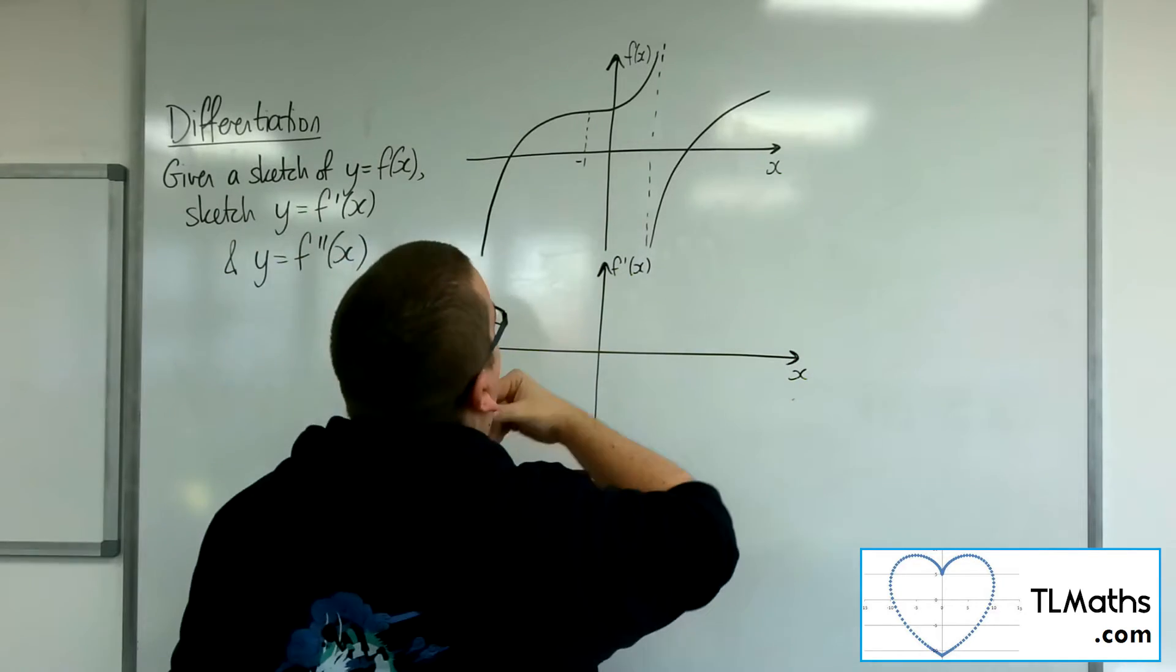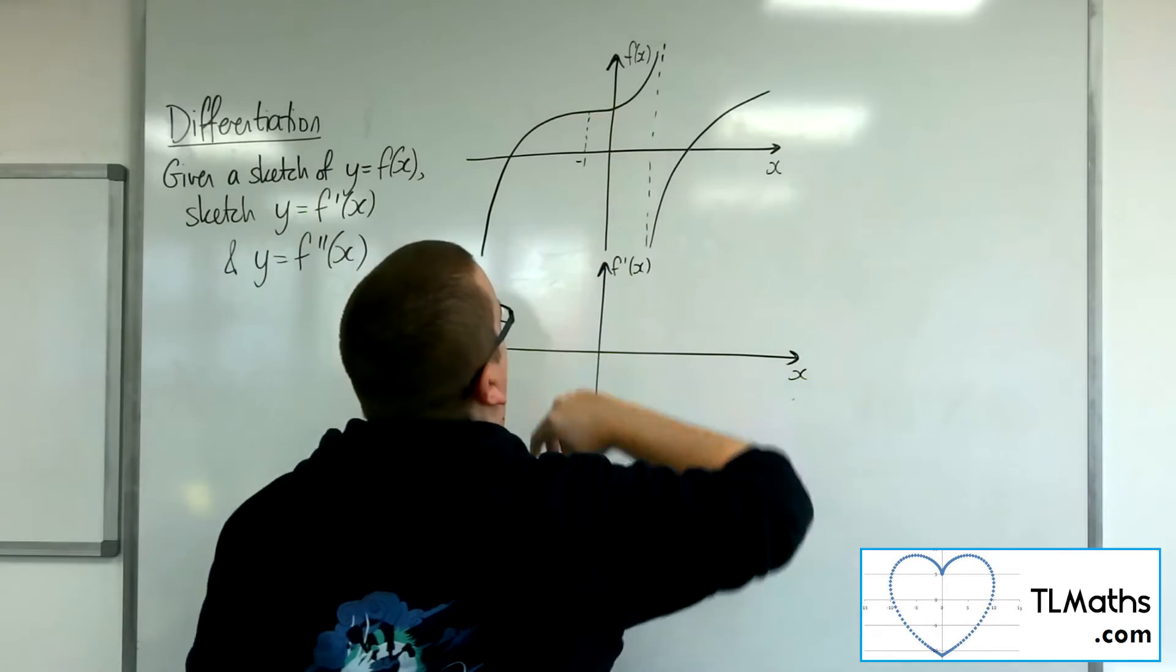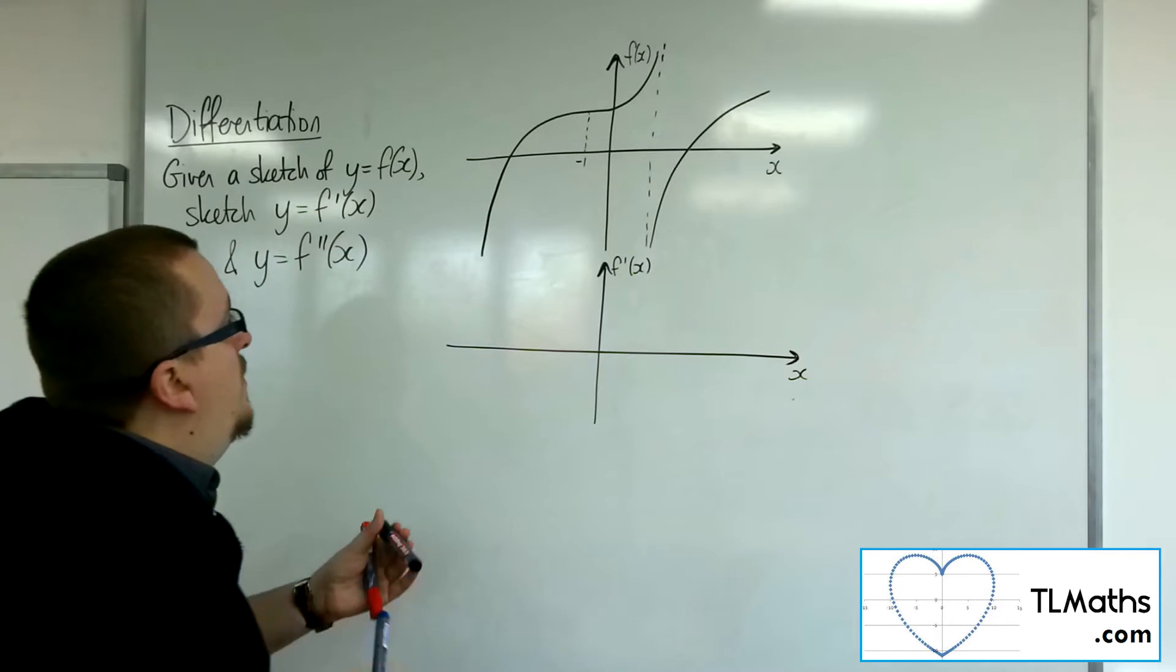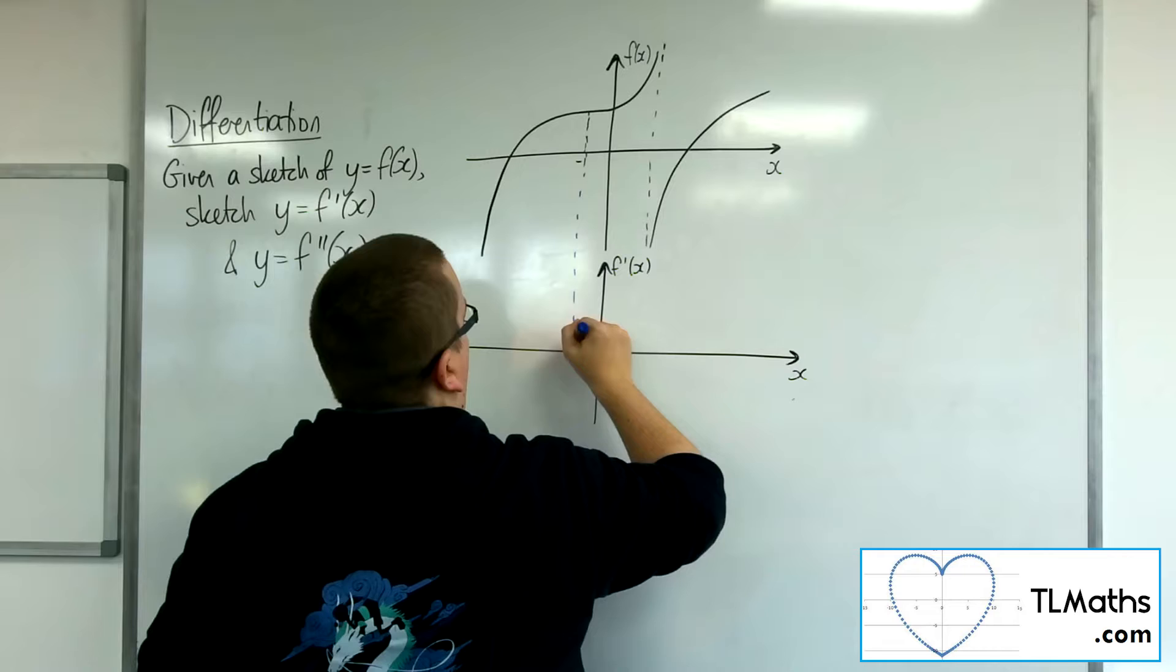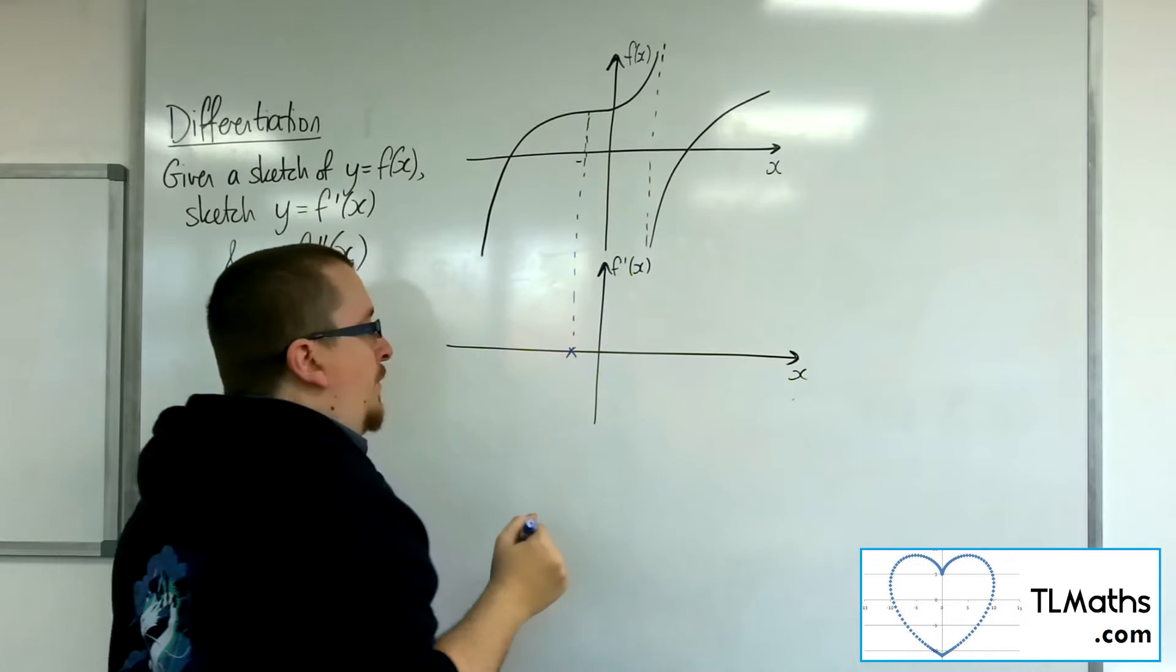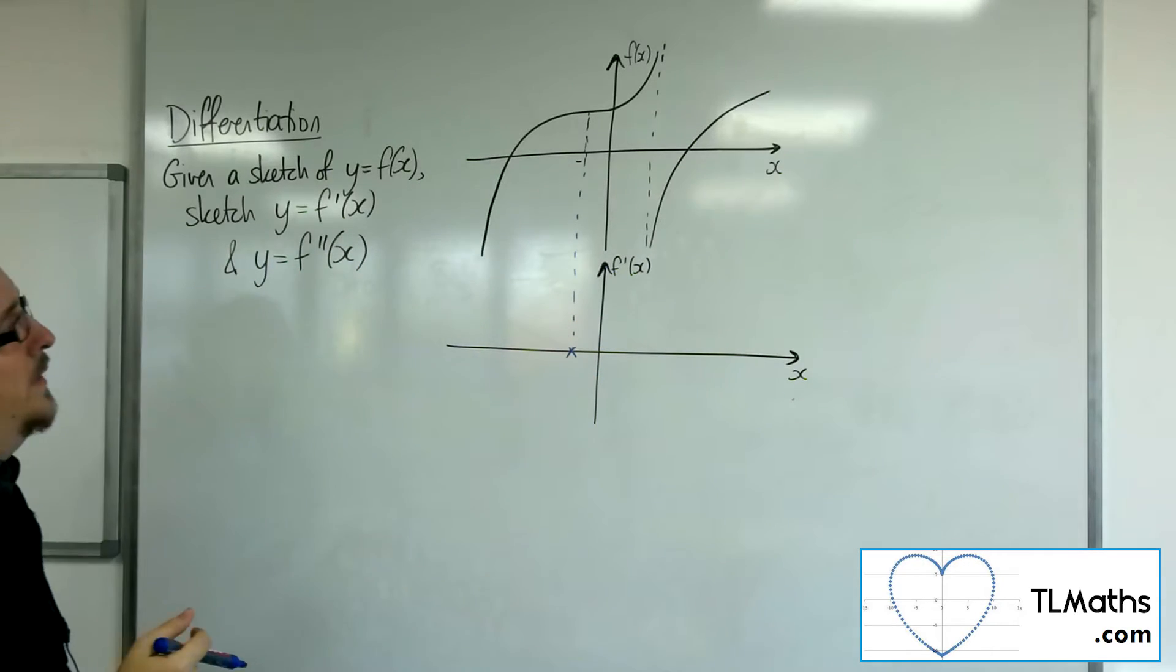So we notice that this curve has a stationary point at minus 1. So that is going to be where this curve will be crossing through the x-axis.